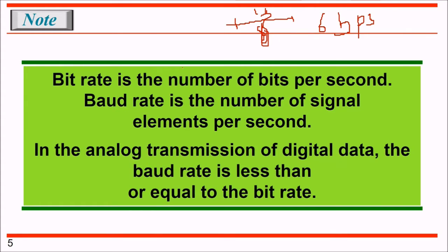Baud rate is the number of signal elements per second. From one point to another we consider it one signal element. If we have four bits in one signal - say 1, 0, 0, 1 - then the baud rate is four. In analog transmission of digital data, the baud rate is less than or equal to the bitrate.